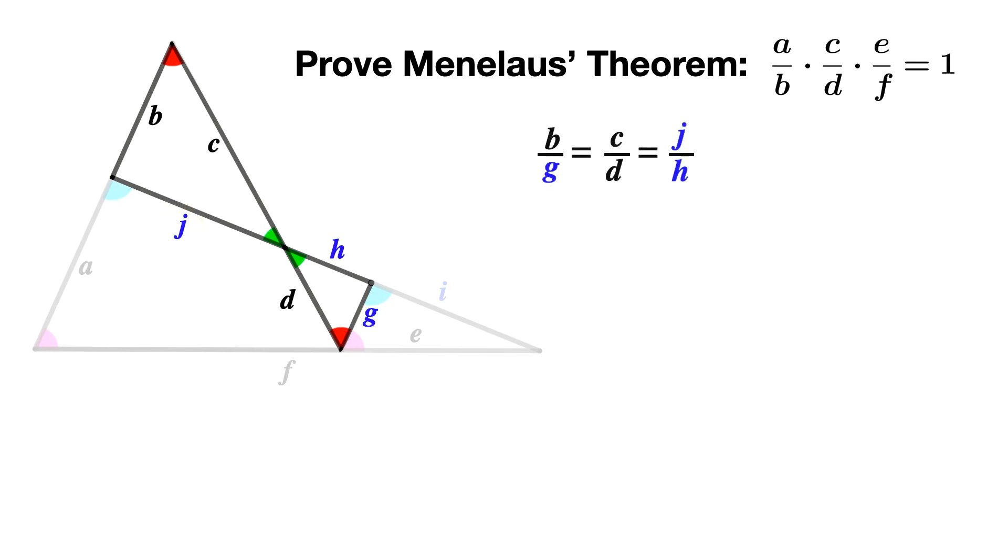Thus, we know that B is to G, as C is to D, and as J is to H.